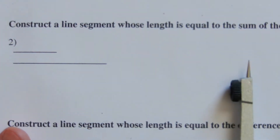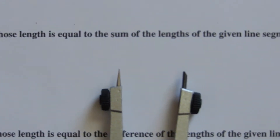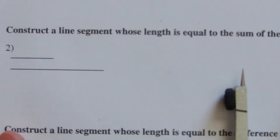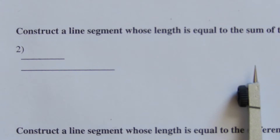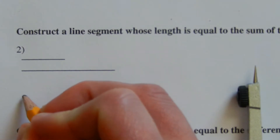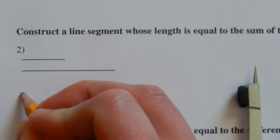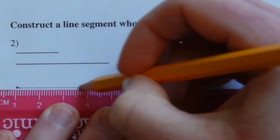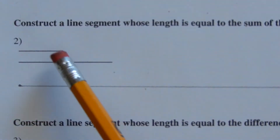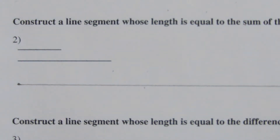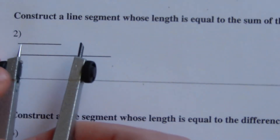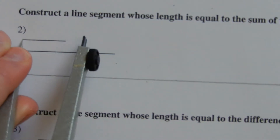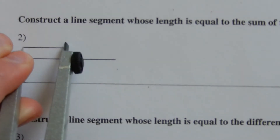Number two: we're going to construct a line segment whose length is equal to the sum of the lengths of the given line segments. We're adding the measurements together, but not using numbers. Starting with an endpoint, I'll draw a straight line extending from it. Now I'm going to take my compass and line it up on the endpoint of the first segment, taking the pencil point to the second endpoint of that first given segment.